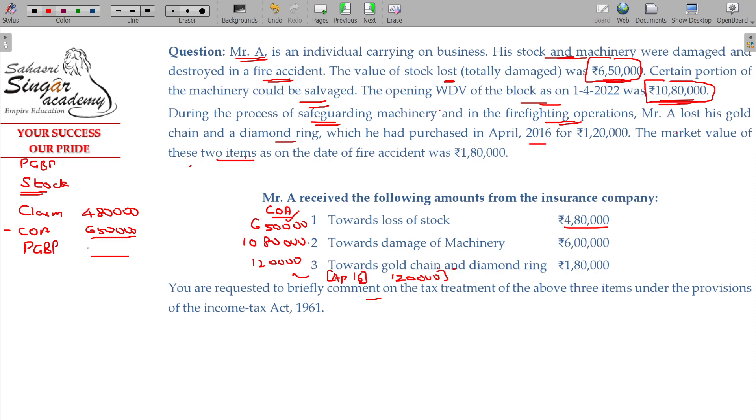The claim received versus 1 lakh 70 loss. It is assumed that stock is already available in the purchase value itself. That is how we will see. Next.